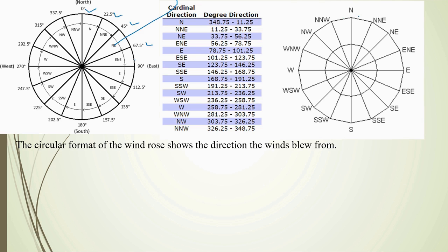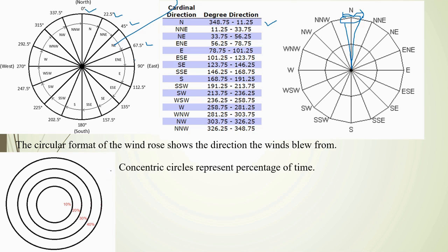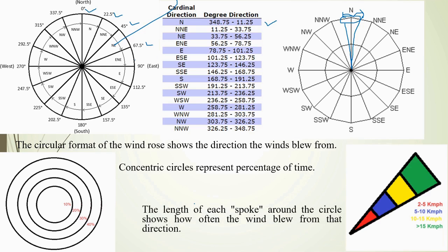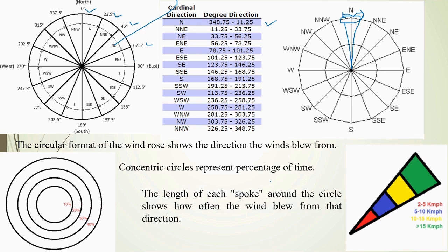So north will be this portion, with 22.5 degrees on each side. You can read here what degrees are covered for north, northeast, and the other directions. The concentric circles represent the percentage of time, and these are the spokes. The length of the spokes around the circle shows how often wind blew from that direction.